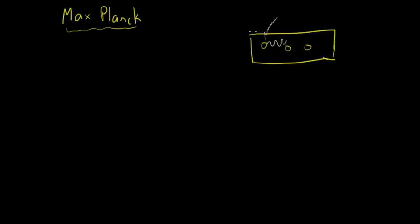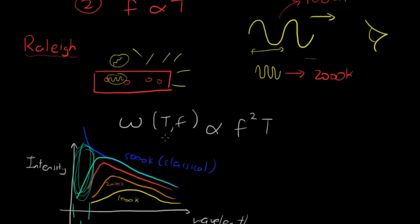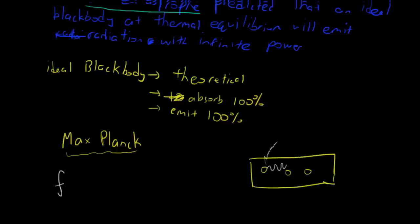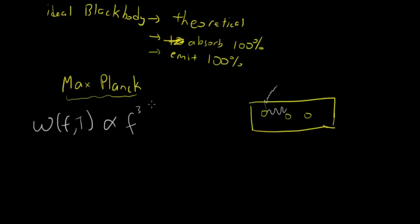Remember the equation that Rayleigh produced from that model? Max Planck expounded on that equation. Basically, Max Planck's equation was this — using the same variables, he said that this was proportional to the cube of the frequency multiplied by one over E to the power of hf over kT minus one, where h is Planck's constant and f is frequency.